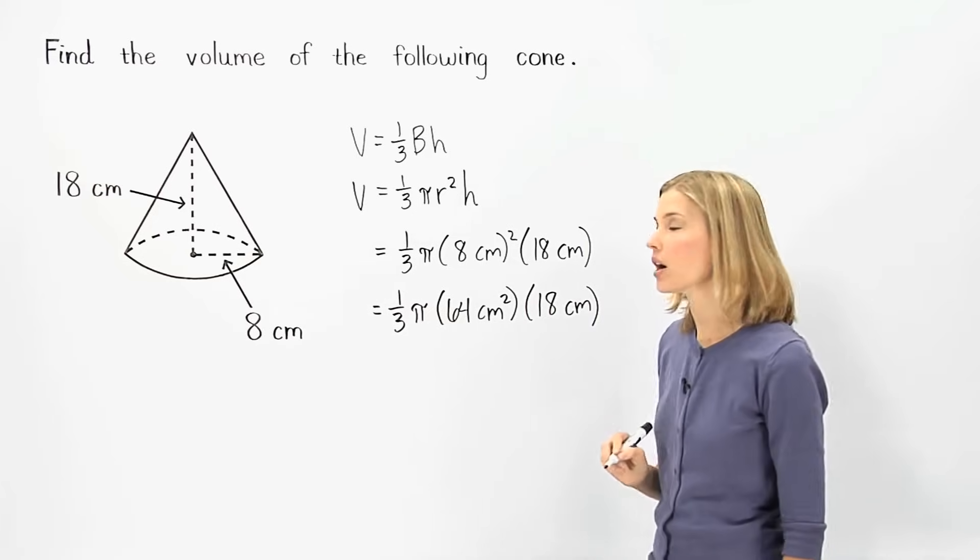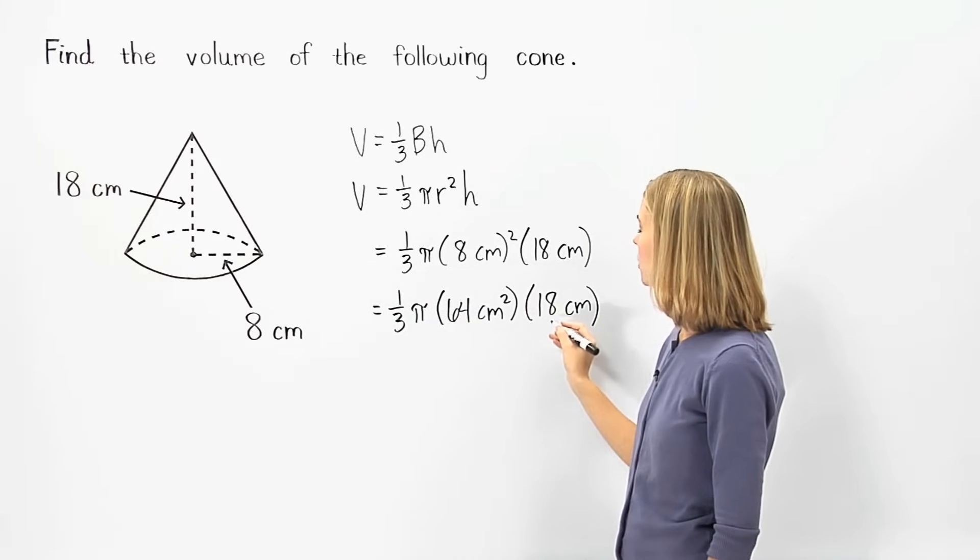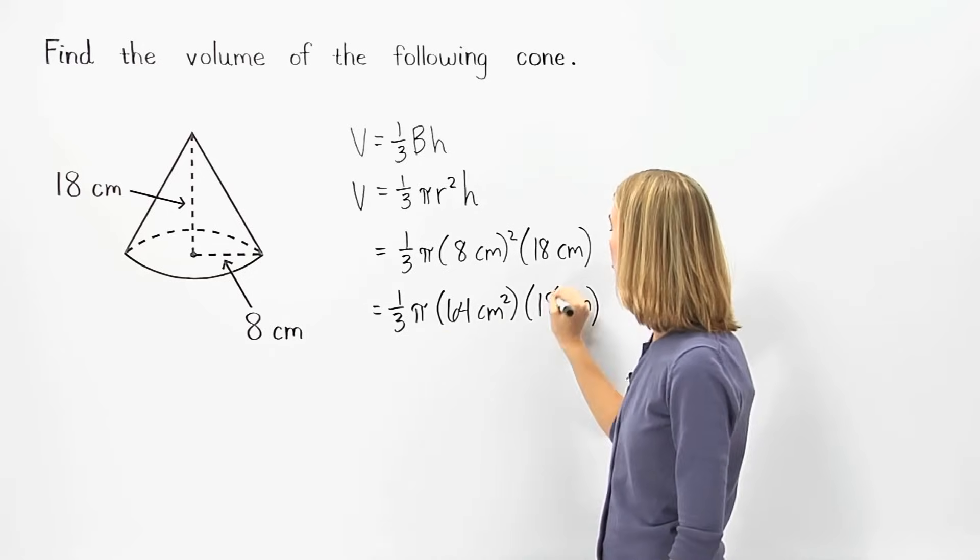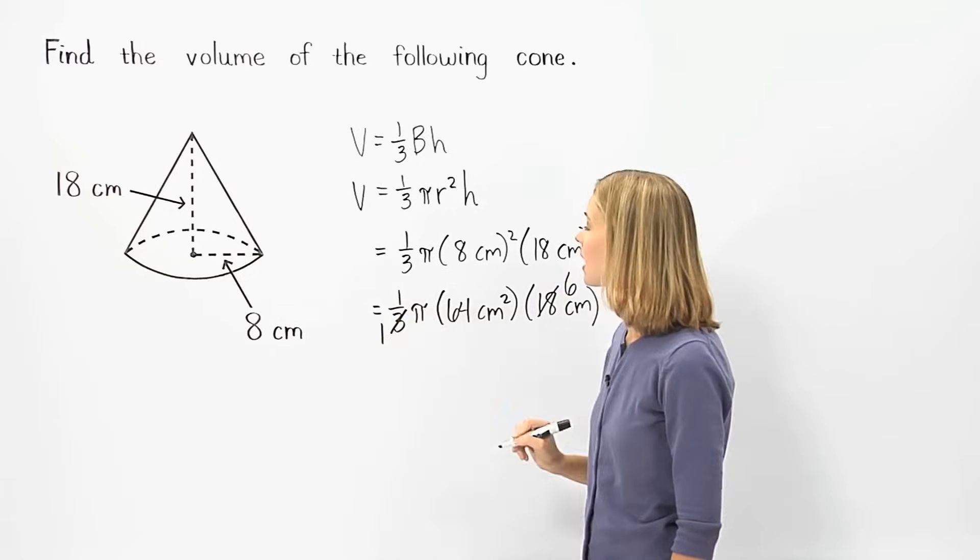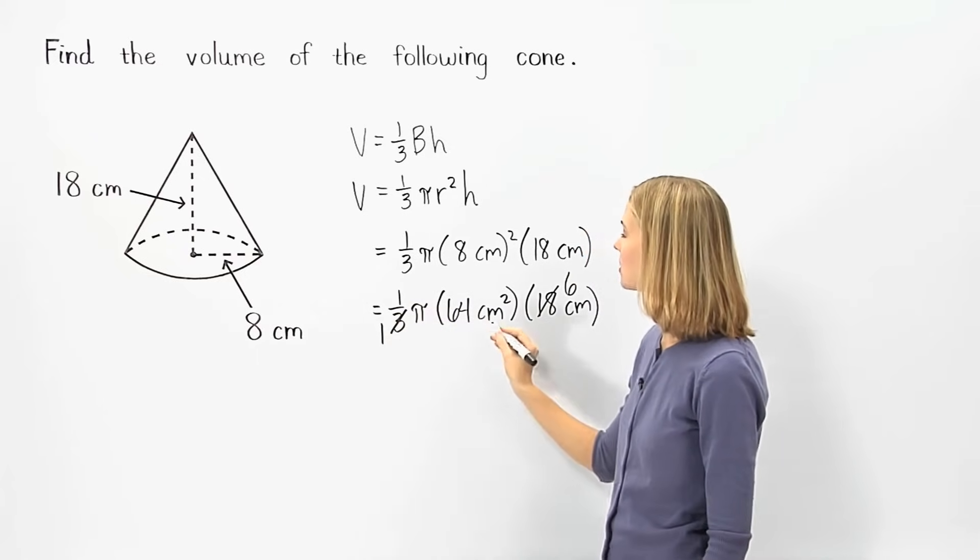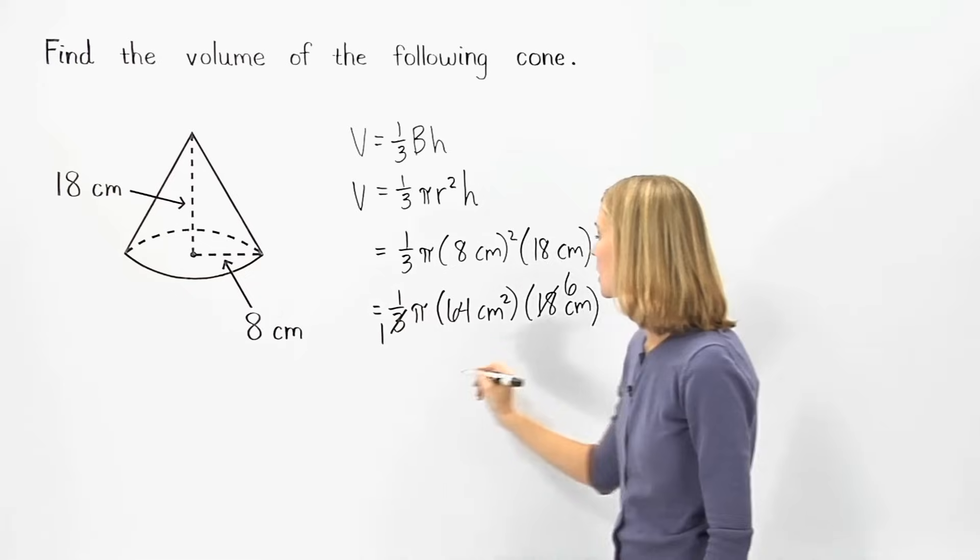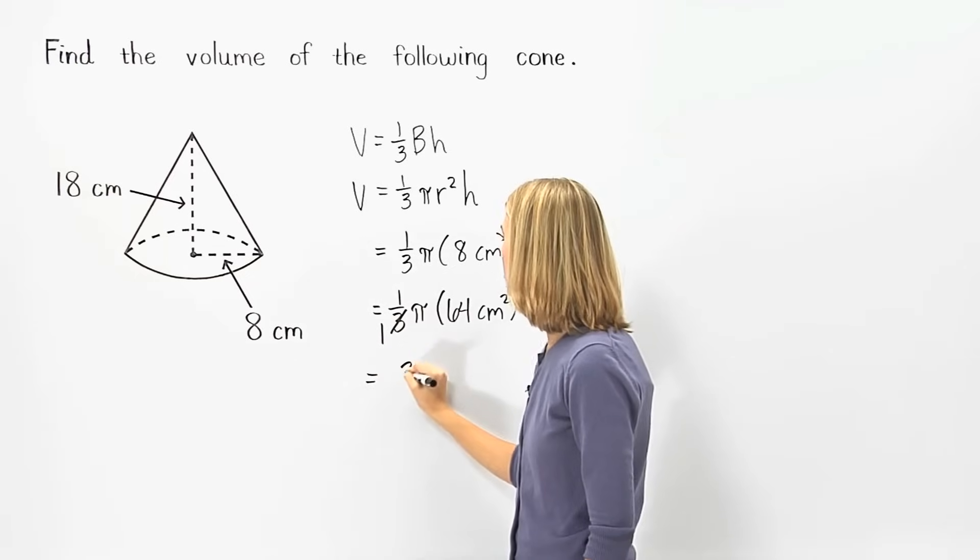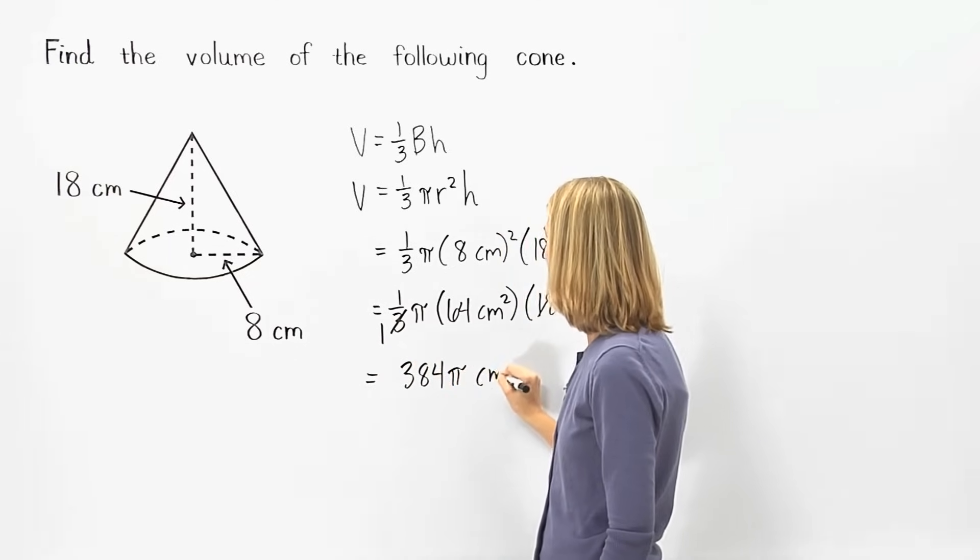Simplifying from here, I would multiply one-third times 18 next. Notice that 18 and 3 cross cancel to 6 and 1. And we have one times pi times 64 centimeters squared times 6 centimeters, which simplifies to 384 pi centimeters cubed.